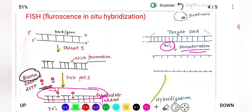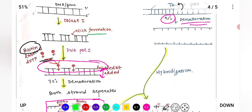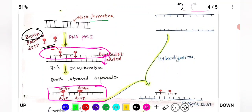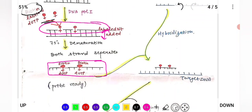After denaturation, both strands inside the cell separate. Then hybridization occurs — the probes we prepared are hybridized to the target. The probe, being complementary to the target sequence (gene of interest), goes and binds there. The biotin-labeled probe binds complementarily to its target sequence.